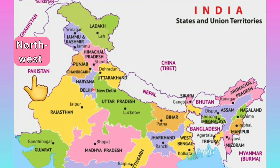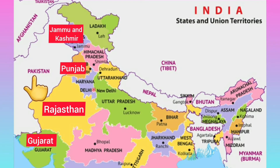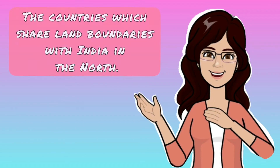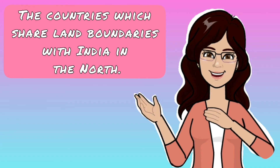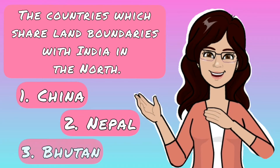Pakistan shares a land boundary with three Indian states and one UT: Gujarat, Rajasthan, Punjab, and Jammu and Kashmir. Now let us know about the countries which share land boundaries with India in the north — they are China, Nepal, and Bhutan.